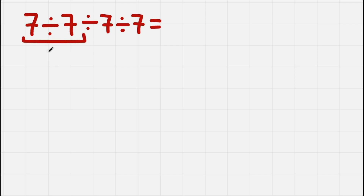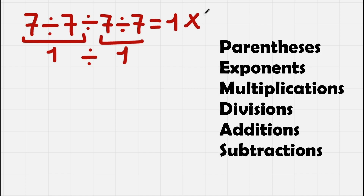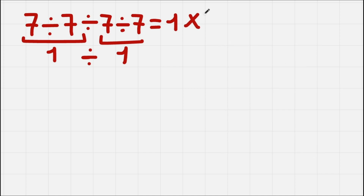We have 7 divided by 7 — we get 1, then 7 divided by 7 — we get 1, and one more division gives us 1. But this answer is not correct, because according to PEMDAS, or order of operations, if we have the same type of operations, we need to work from left to right, and here we didn't do that. We did this division first, then this, then this — but we need to work from left to right.